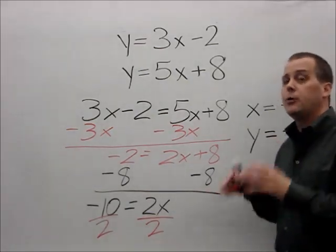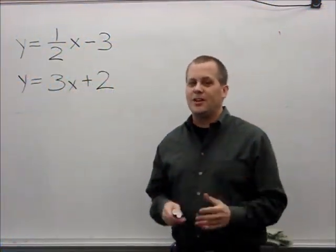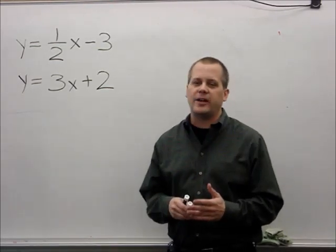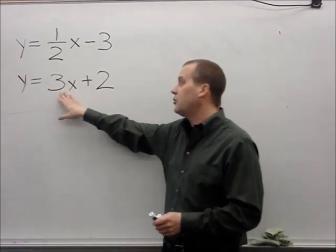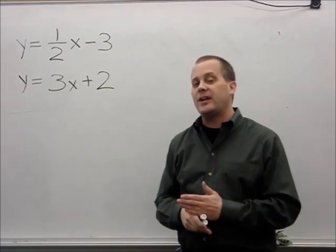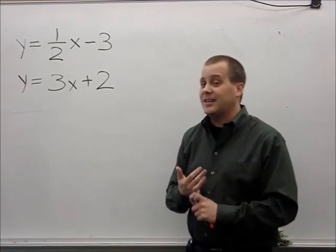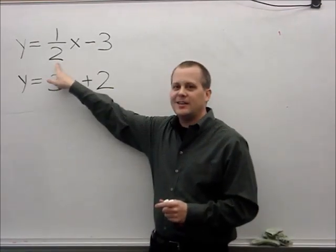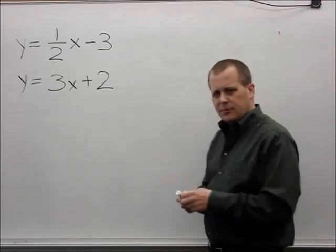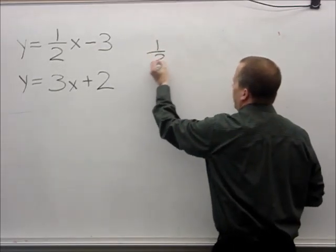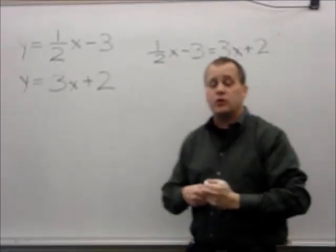Hi, welcome back Tigers. We're doing the equal methods process again, trying to find the point of intersection. We have y equals one-half x minus 3, and y equals 3x plus 2. A lot of students dislike this type of problem because of the fraction, so let me show you a trick. I'll rewrite: one-half x minus 3 equals 3x plus 2, making those two equations equal.